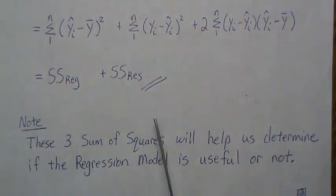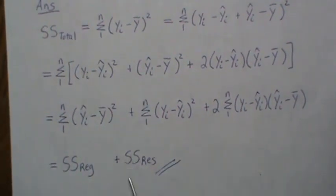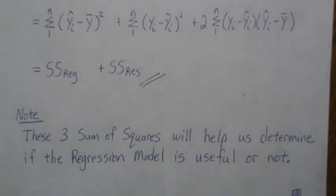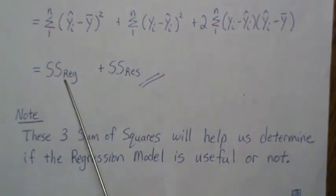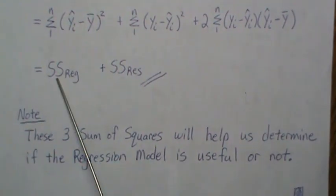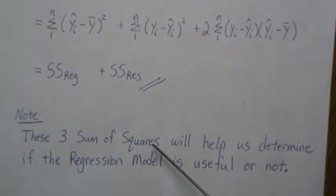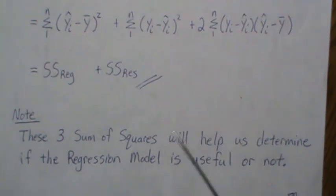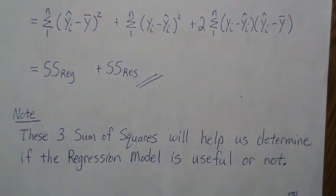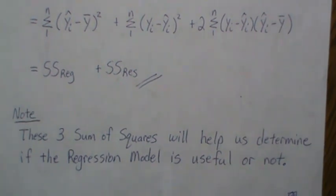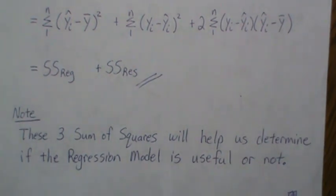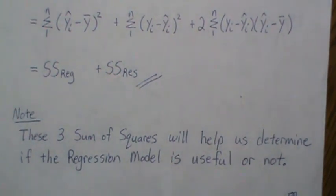In the next one to three videos we'll use these three sums of squares to determine if the regression model is useful. If the regression sum of squares is close to the total, the model is good; if the residual sum of squares is close to the total, the model is bad. We'll develop a test statistic — which requires assuming a distribution for our data — and derive distributional properties to conduct a formal test. Thanks, please like and subscribe so you don't miss the next one!